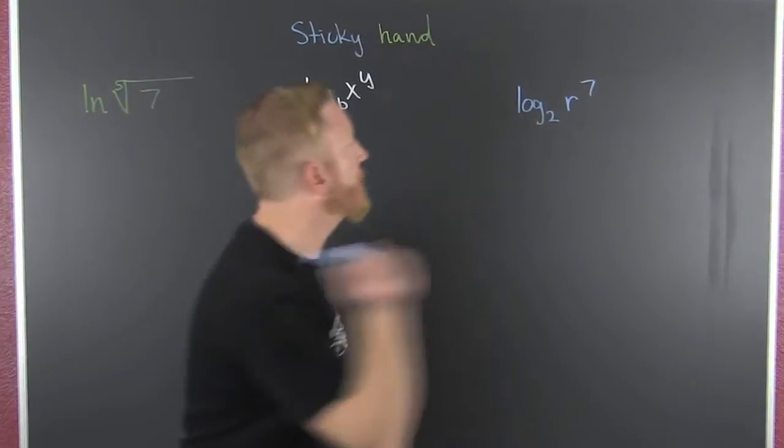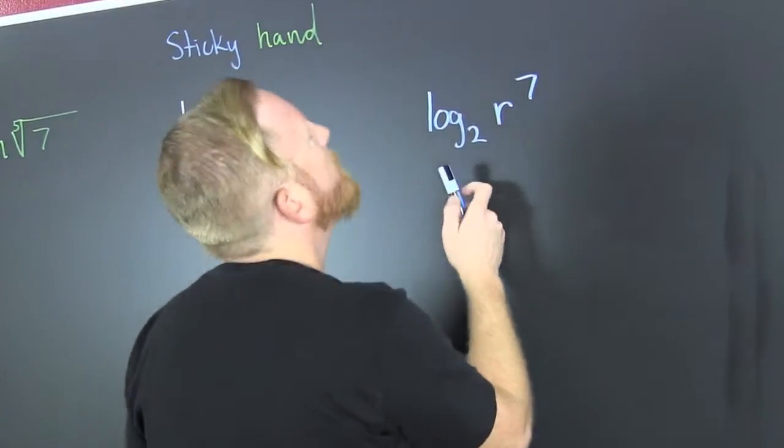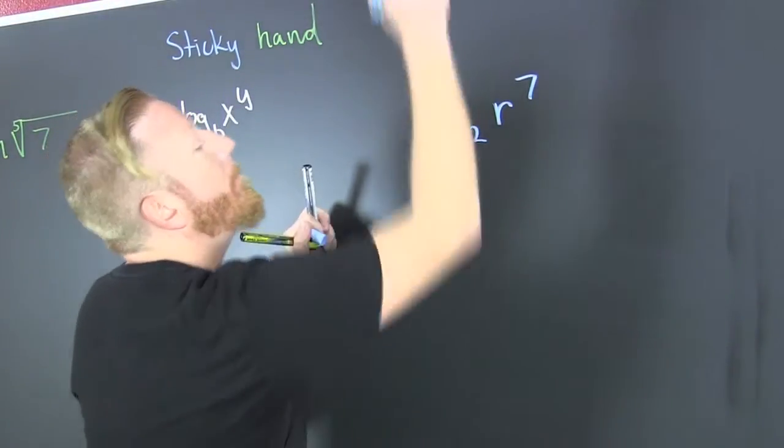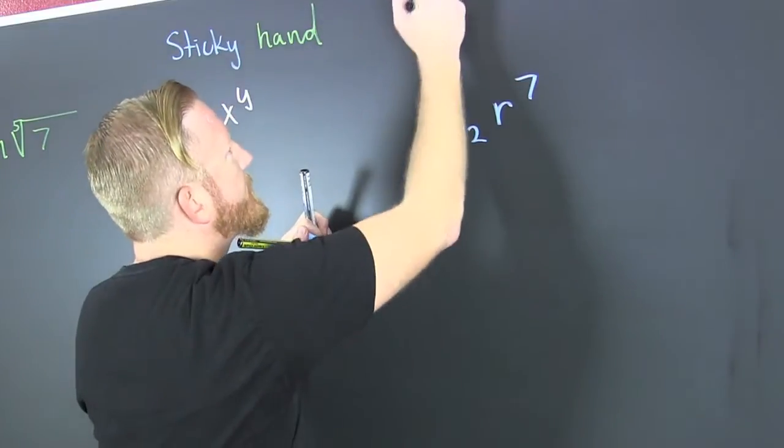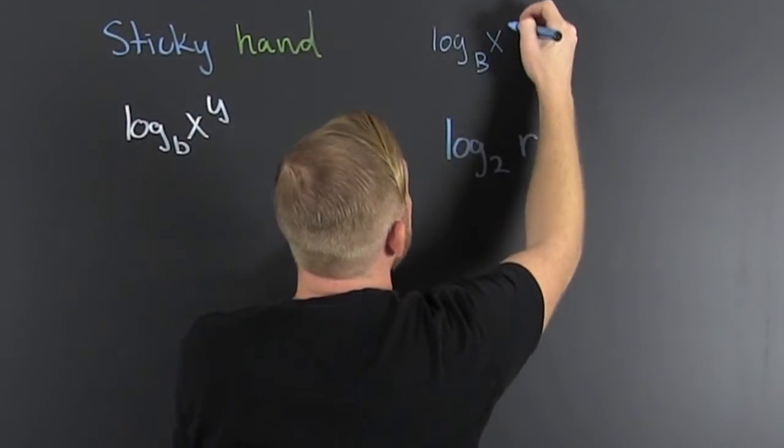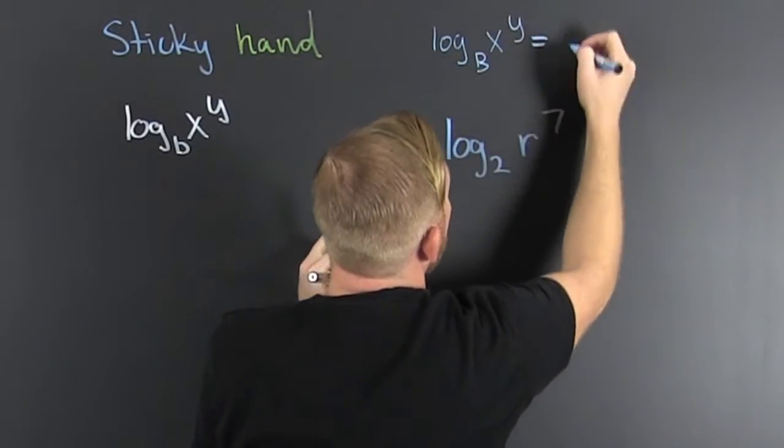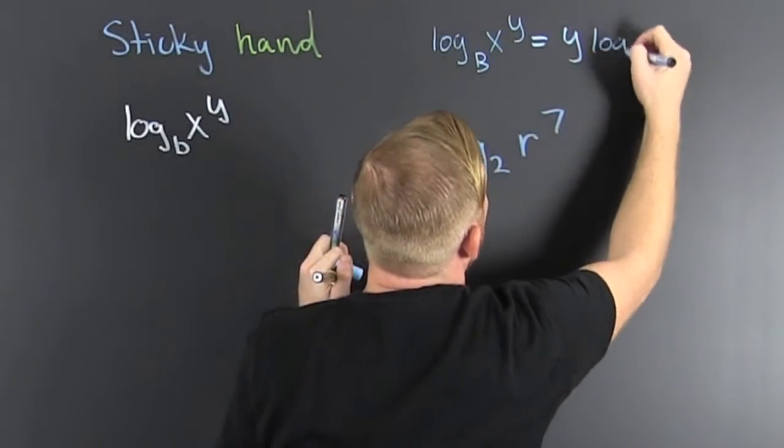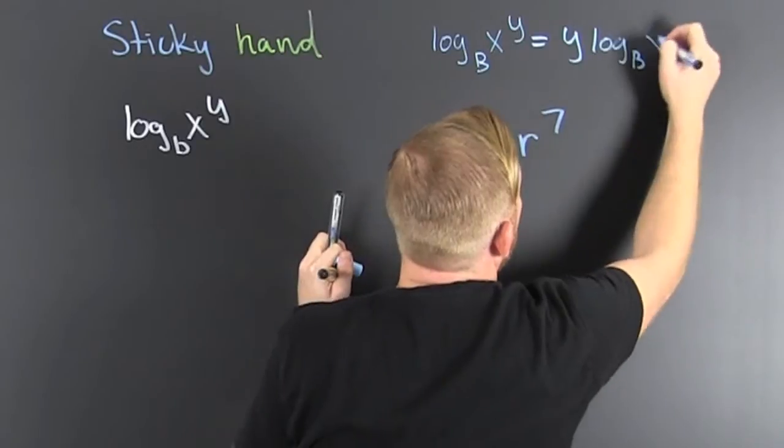What? Let's go and let's look. The power rule for exponents is log base b of x to the y. That can be seen as y log base b of x.